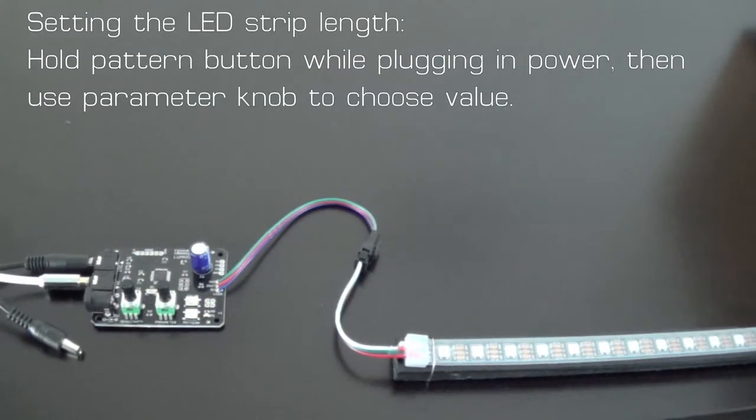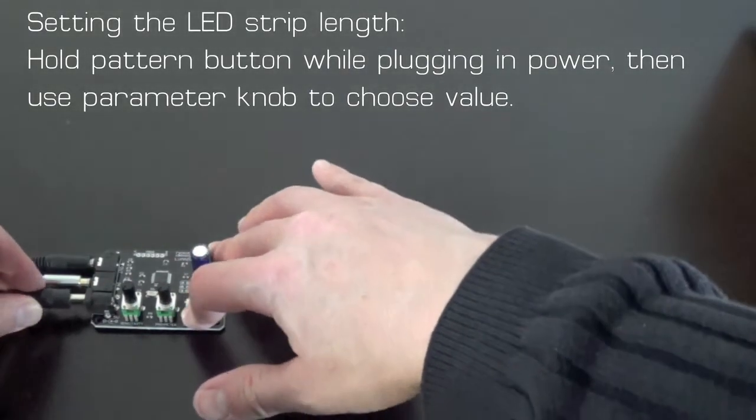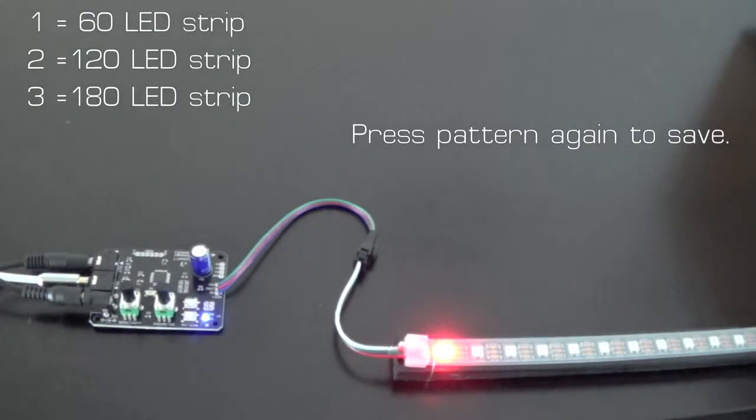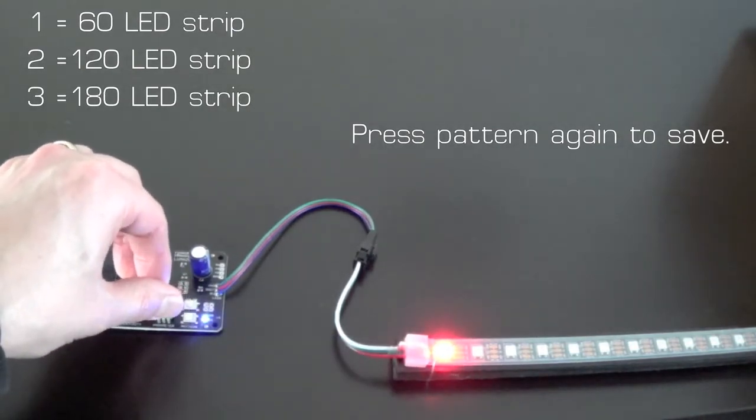To configure the Lumazoid for the number of LEDs you have, hold down the pattern button while plugging in the power. One, two, or three red LEDs will show on the strip.